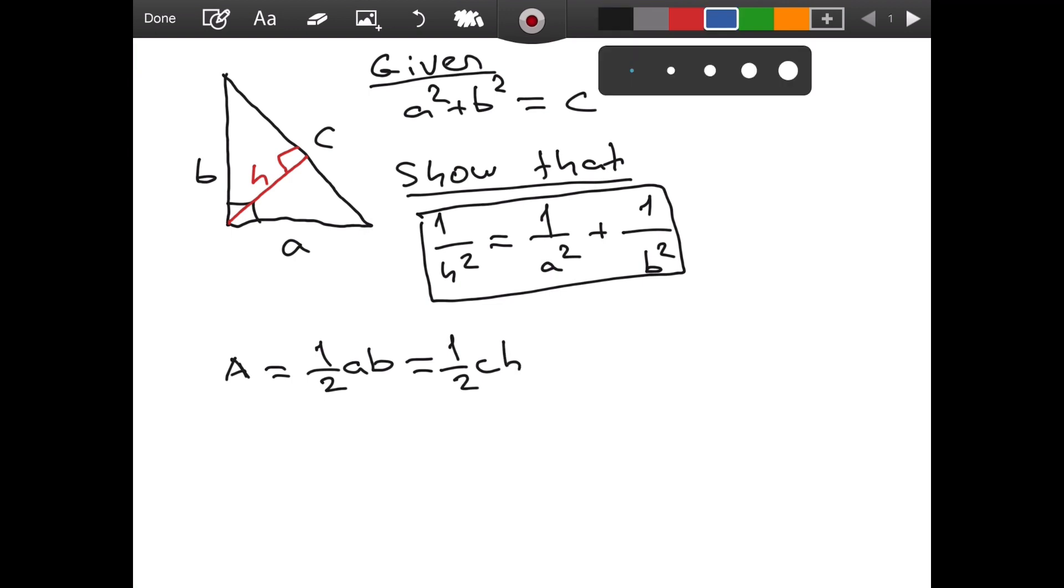And as you can see, from this equality, from this equation, 1 over 2 cancel. And we have that. A times B is equal to C times H.